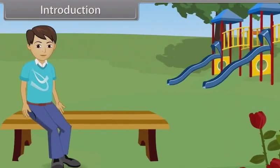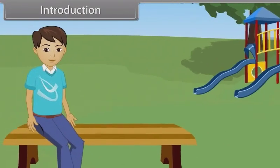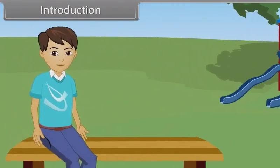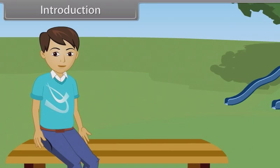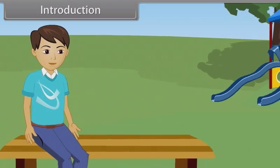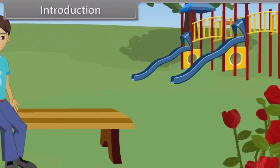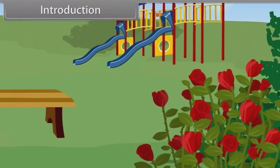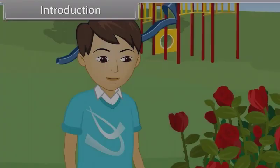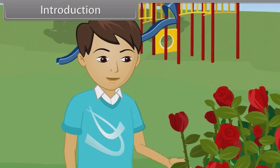Today is a sunny day. Vishal is in the garden to enjoy the day. Suddenly, he looks at a flower and he likes it. As he approaches the flower, he just withdraws his hand in a fraction of a second. What happened to him?